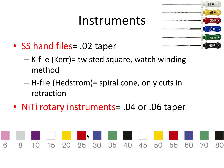Going back to the color scheme — the bigger the number, the wider the diameter. The pattern starts: pink, gray, purple, white, yellow, red, blue, green, black — and then white, yellow, red, blue, green, black repeats as the files get thicker. If you remember that white starts at size 15 and memorize 'white, yellow, red, blue, green, black,' repeating it over and over, you can remember the majority of file sizes, which is handy both clinically and on exams.